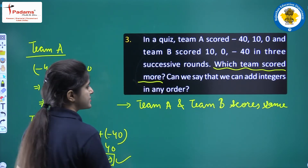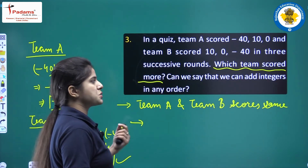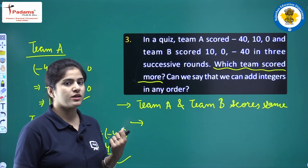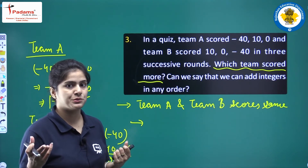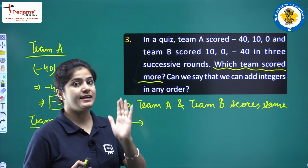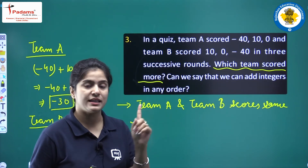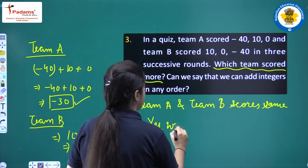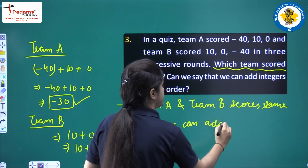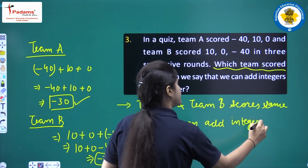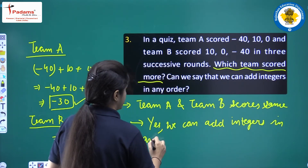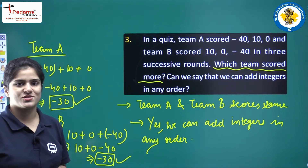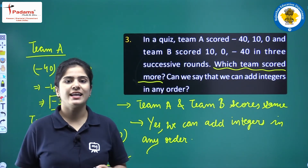The second part asks: can we add integers in any order? We discussed the commutative property under addition, which tells us that yes, we can add integers in any order.